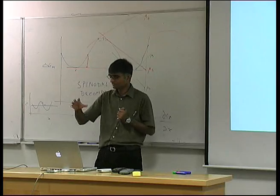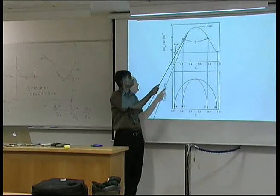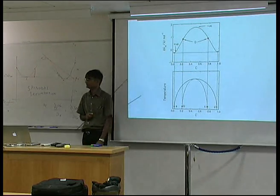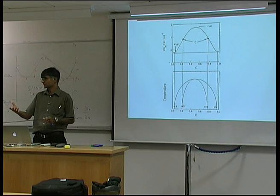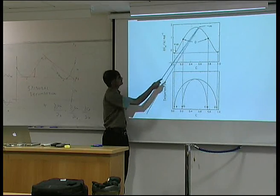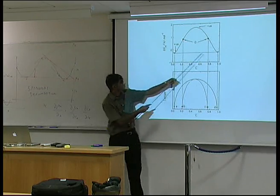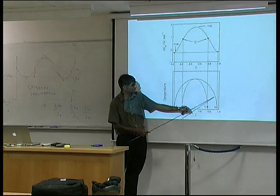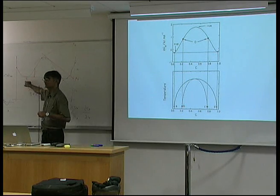Let's make this a little more formal. These two points defined by the common tangent - any solution in here can decompose into a mixture of this and this, leading to a reduction in free energy. The process by which it decomposes may involve nucleation or it may involve spontaneous decomposition into A-rich and B-rich regions. The locus of these two common tangent points gives us a region of the phase diagram where the solution will tend to decompose into the equilibrium composition.